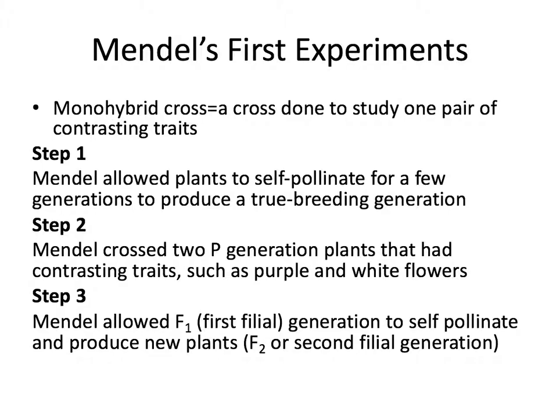Mendel's first experiment involved a monohybrid cross — a cross done to study one pair of contrasting traits. The first thing Mendel did was he allowed the plants to self-pollinate for a few generations to produce a true breeding generation. He then crossed two of that generation with contrasting traits such as purple and white flowers, and finally allowed the first filial generation to self-pollinate and produce new plants, which became the F2 generation.